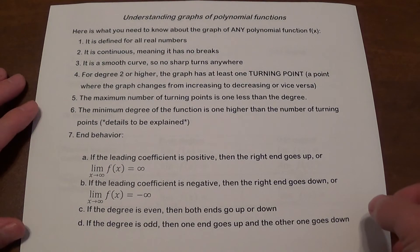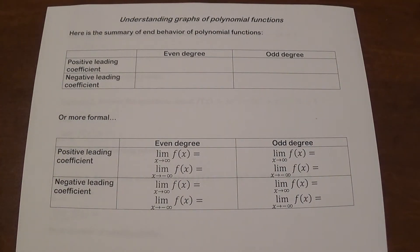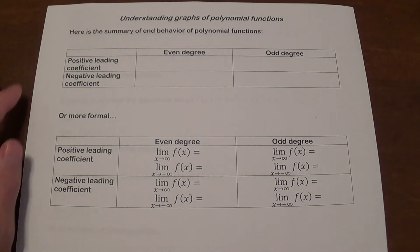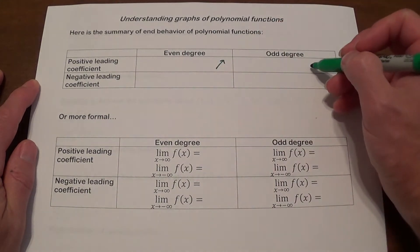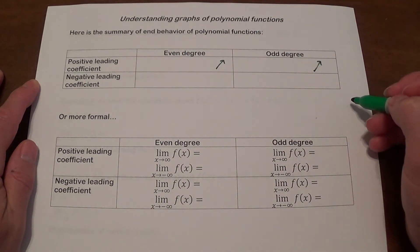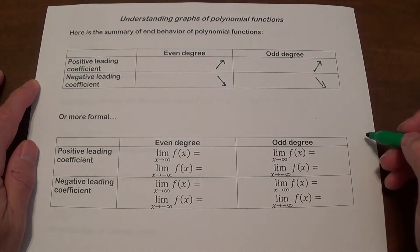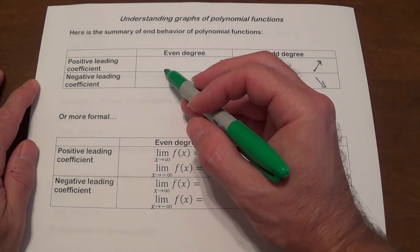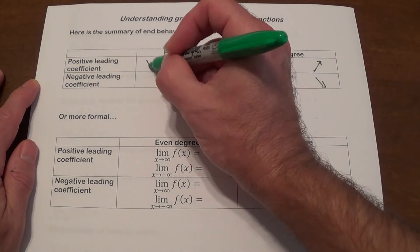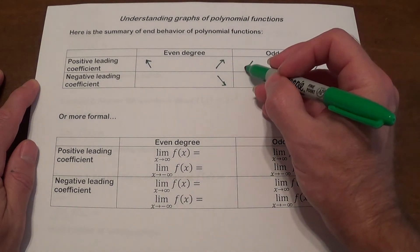We're going to make a chart to help remember that better. If the function has a positive leading coefficient, the right end always goes up regardless of the degree. If the leading coefficient is negative, the right end is always going to go down. Now for the other end: if the degree is even, both ends go in the same direction, so if the right end goes up, the left end goes up as well. If the degree is odd, the right end goes up and the left end goes down.